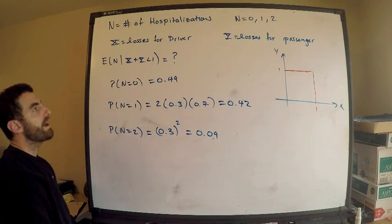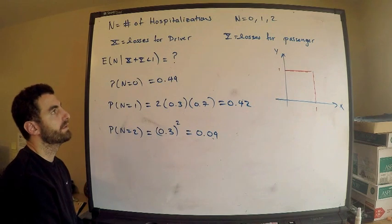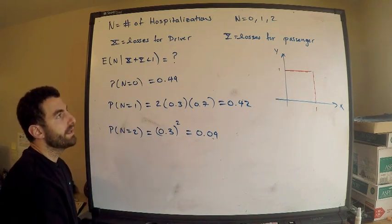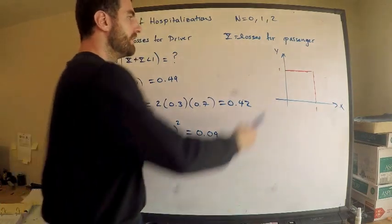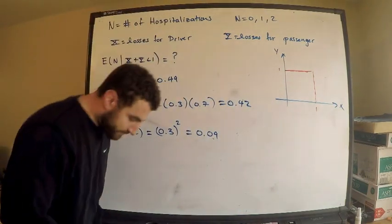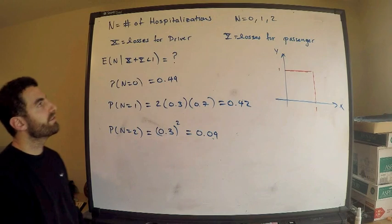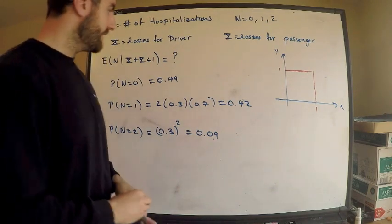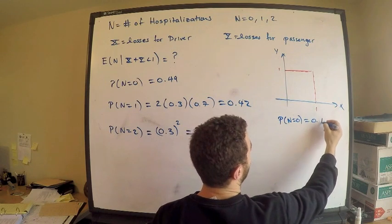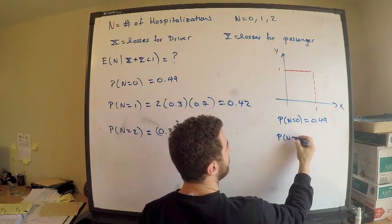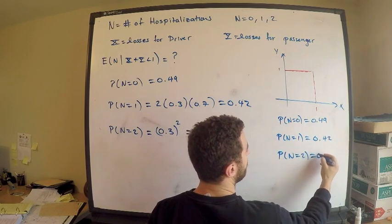Now, what are we actually after? We're after the expectation — the expected number of hospitalizations given the total loss is less than one. I have the losses for the driver and the losses for the passenger, and they're both uniformly distributed, so that's why I have 0 to 1. Losses can be less than one, greater than zero — same thing for the passenger as well as the driver. Let me record my work: probability N is 0 is 0.49, probability N is 1 is 0.42, and probability N is 2 is 0.09.